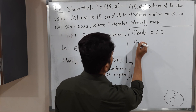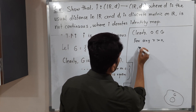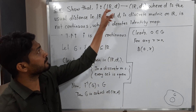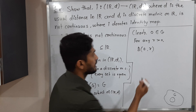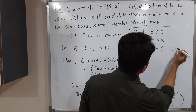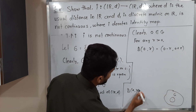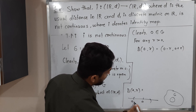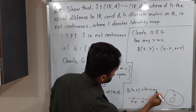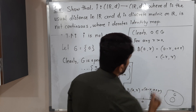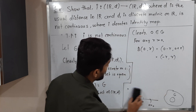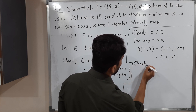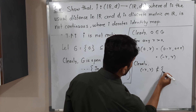For any r greater than 0, consider the ball around 0 with radius r. In the real line, a ball B(A, r) gives the open interval (A - r, A + r). Applying this here with center 0, we get the interval (-r, +r). Clearly, (-r, +r) is not a subset of the singleton {0}.